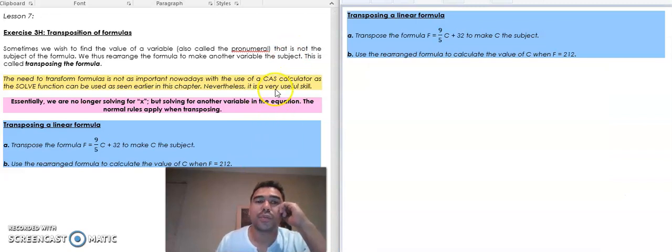So essentially we are no longer solving for x because not all formulas have just a letter x. We're solving for another variable in the equation, but the normal rules will still apply. This example here, we're going to transpose this formula F equals 9 over 5 C plus 32 to make C the subject.